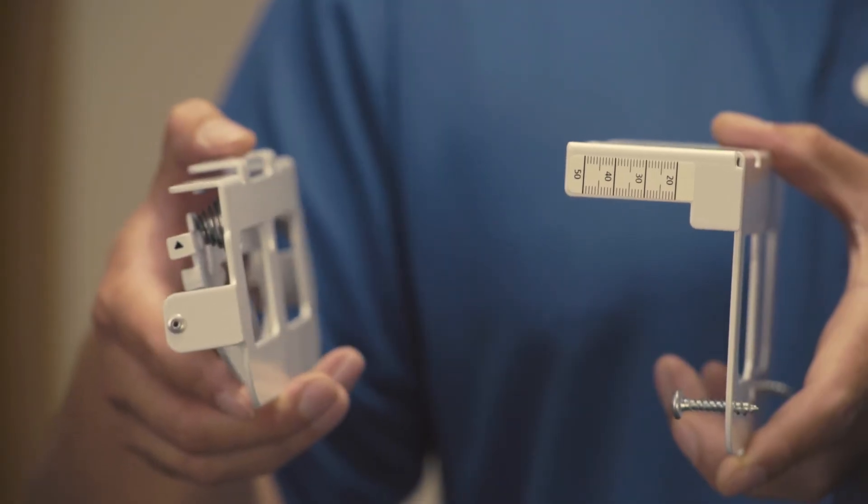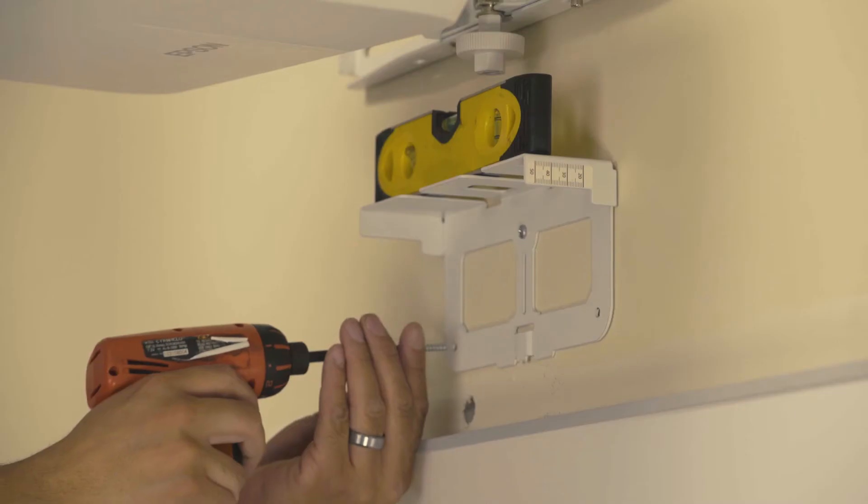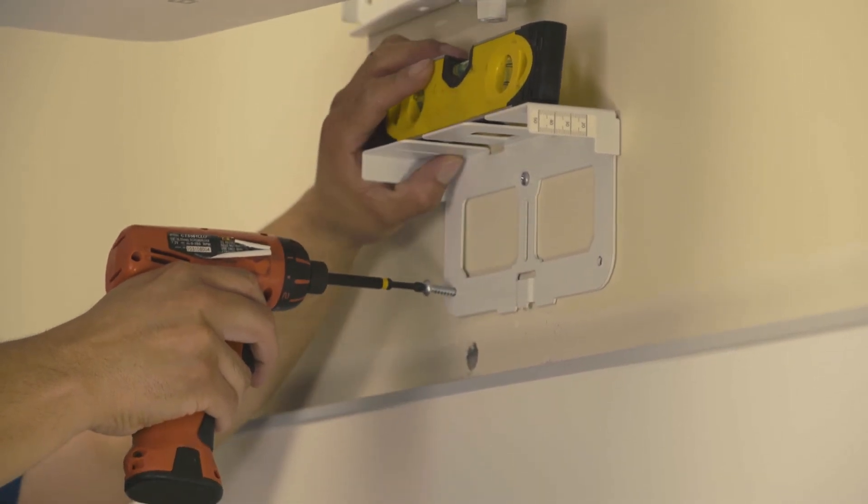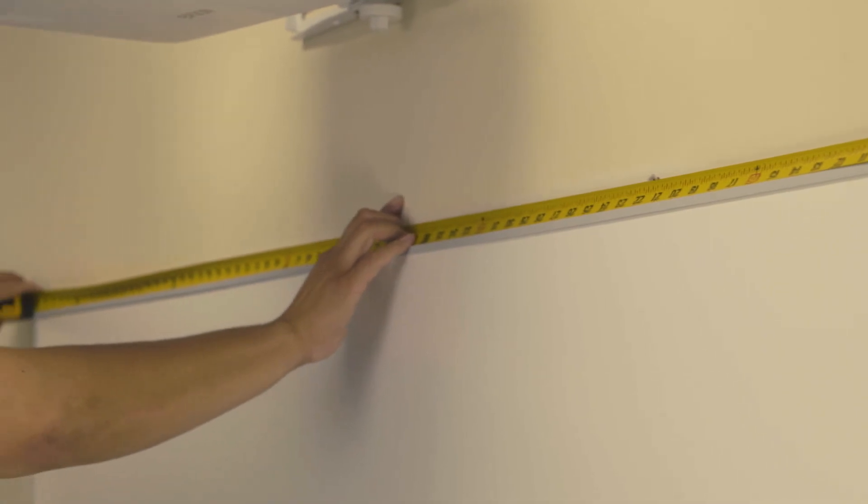First, separate the two parts of the touch module bracket. Using three screws, attach the L-shaped portion of the bracket to the wall. The center of the bracket should be aligned with the center of the board.